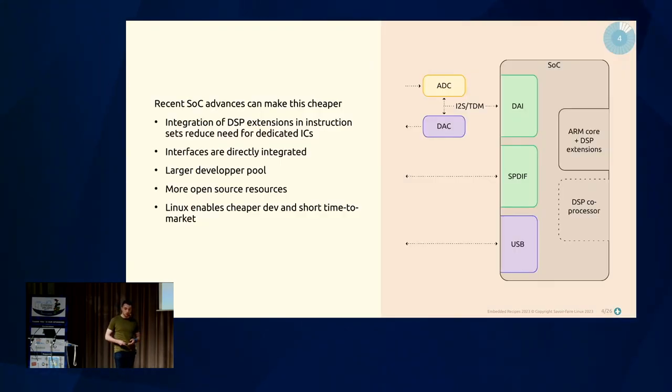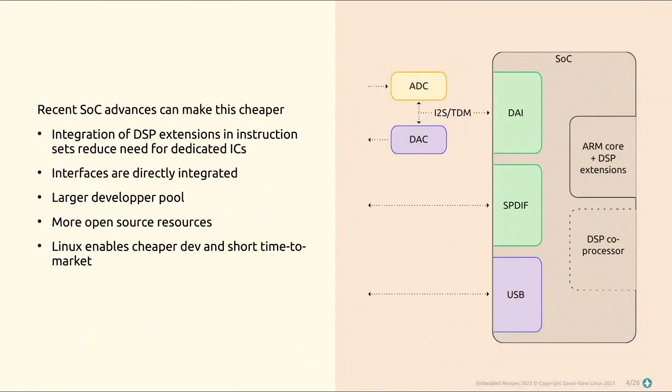The good news is that modern components make it easier to implement complex audio systems. We know of different families of system-on-chips — the i.MX, the STM32MP1, Renesas RZ — that have everything integrated on chip: DSP cores, microcontroller cores with DSP instruction sets, NEON extensions on ARM, and directly integrated interfaces such as I2S, TDM, S/PDIF controllers, and USB controllers.